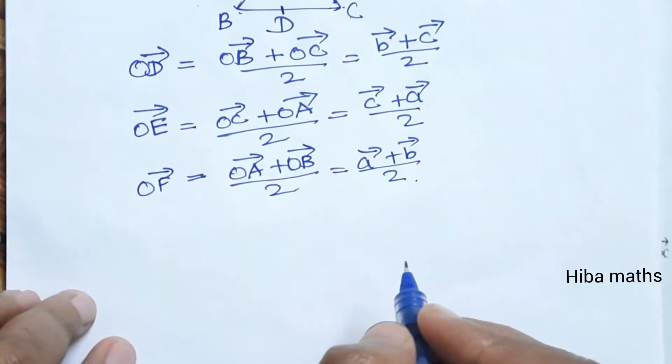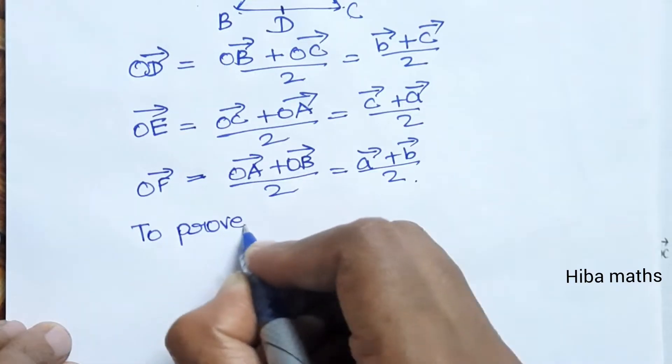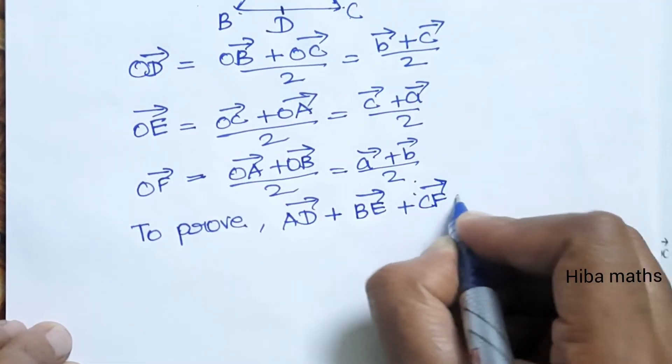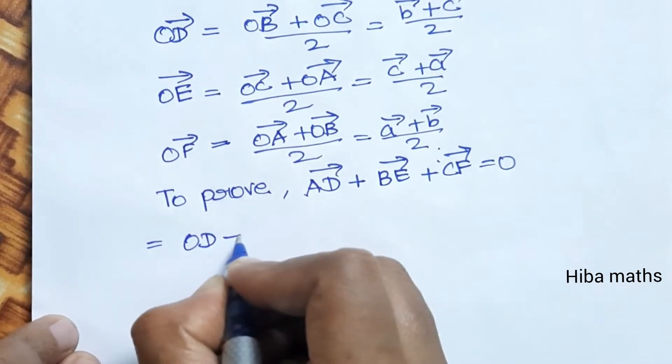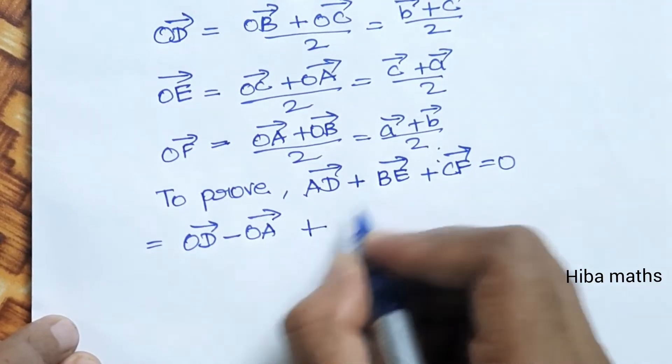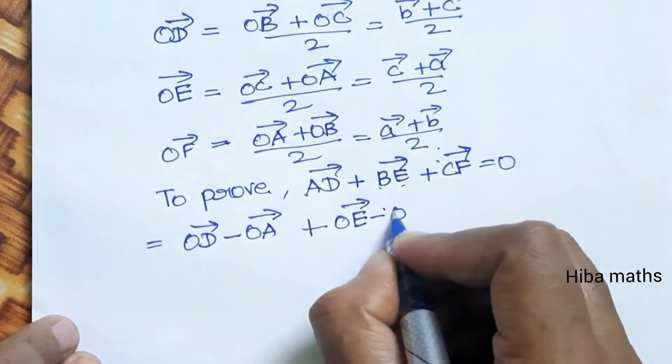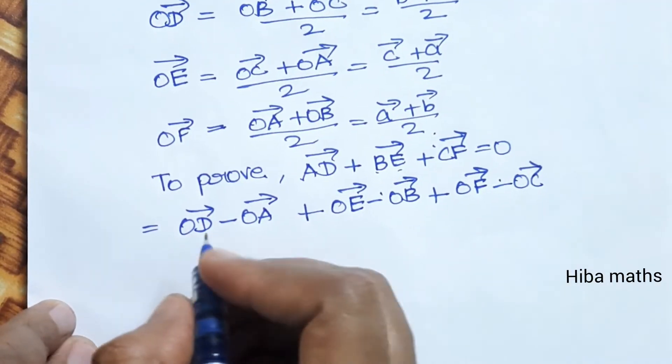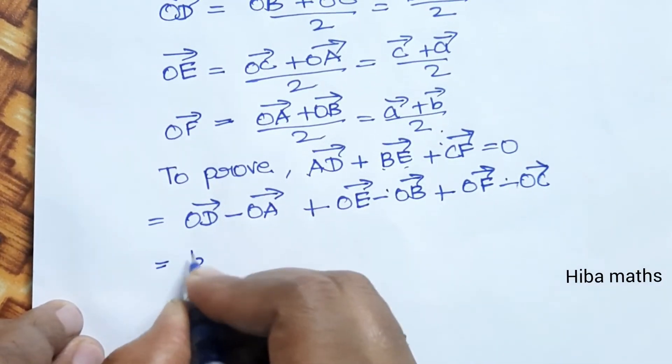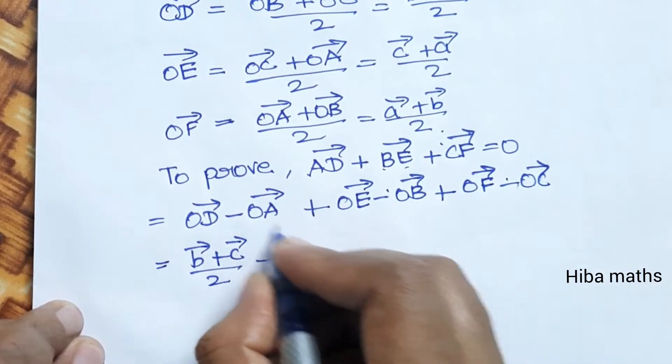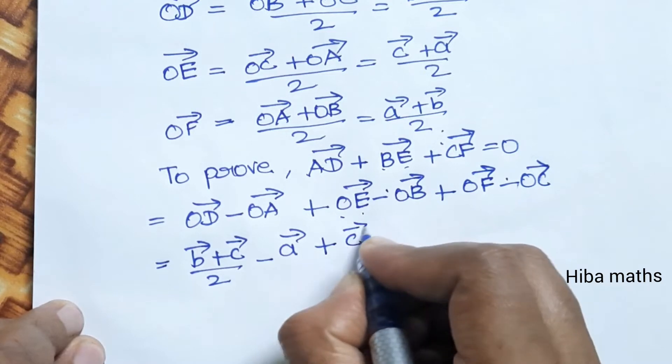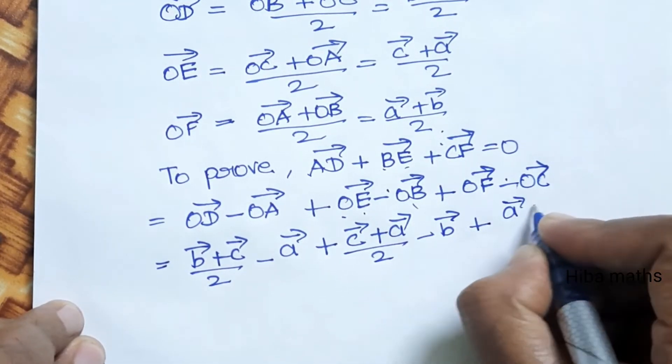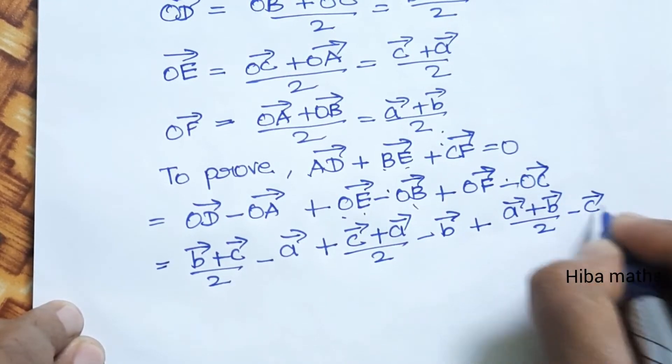To prove AD vector plus BE vector plus CF vector equals 0, we write AD as OD minus OA, BE as OE minus OB, and CF as OF minus OC. Substituting the values we found: AD equals B vector plus C vector divided by 2 minus A vector, plus OE which is C vector plus A vector divided by 2 minus OB which is B vector, plus OF which is A vector plus B vector divided by 2 minus C vector.